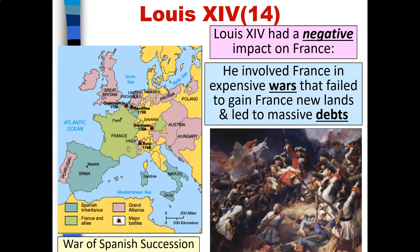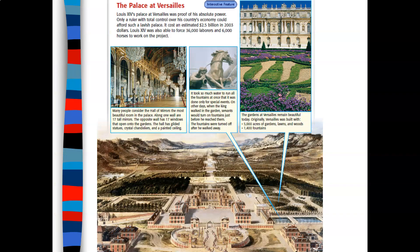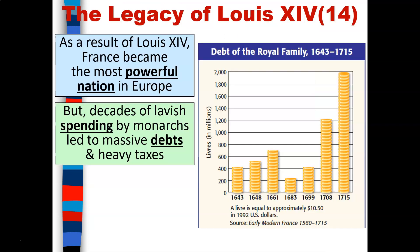Let's look at some of the negative impacts of Louis the 14th on France. He involved France in expensive wars that failed to gain new lands, leading to massive debts. He also used his wealth and art to glorify himself, including the construction of a massive palace called Versailles. As of 2003, it was estimated that the cost of Versailles was about 2.5 billion dollars — a very expensive project all meant to glorify Louis the 14th.